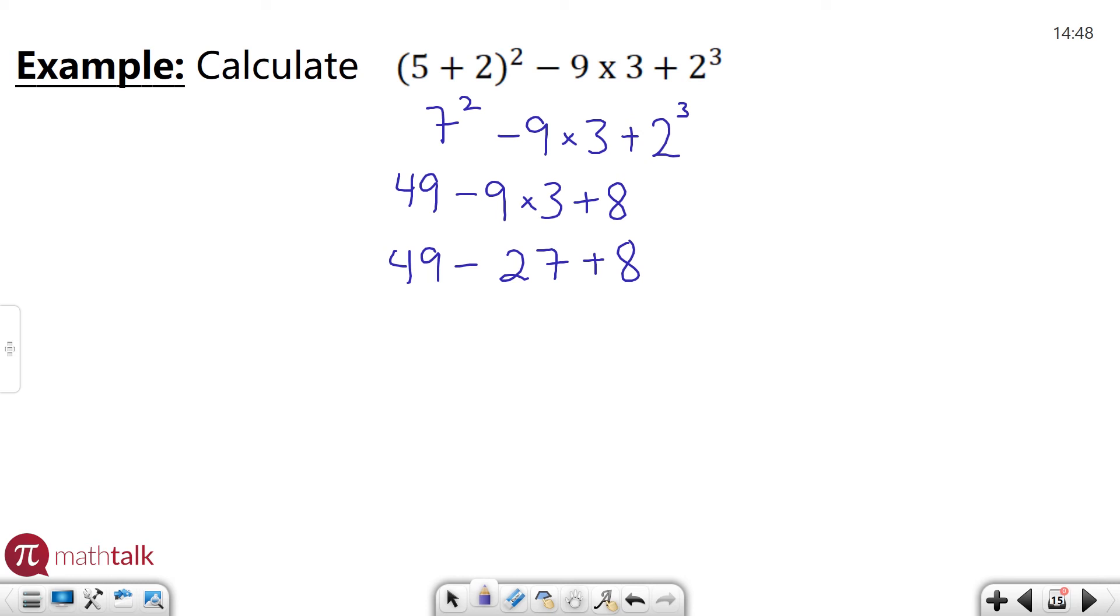All right, moving on. I no longer have any multiplying or dividing. I just have adding and subtracting, and so I'm going to go left to right. The thing with order of operations is you want to follow that in order of left to right as well. So the left part of this is 49 minus 27, which is going to get me 22.